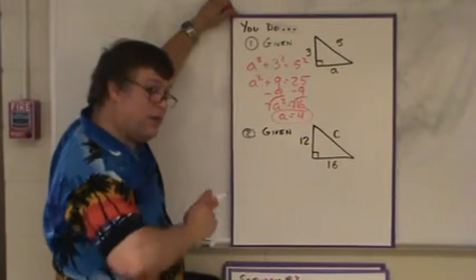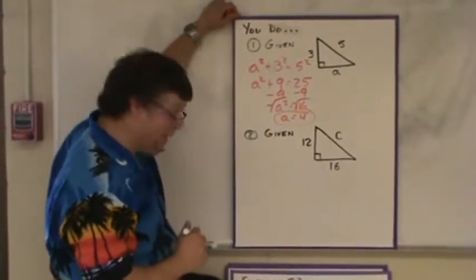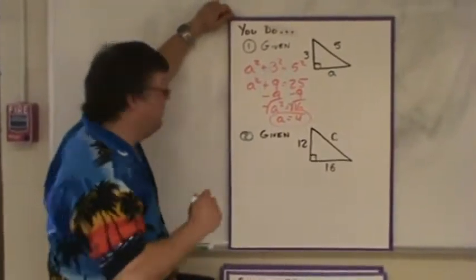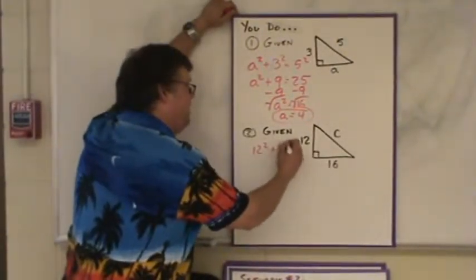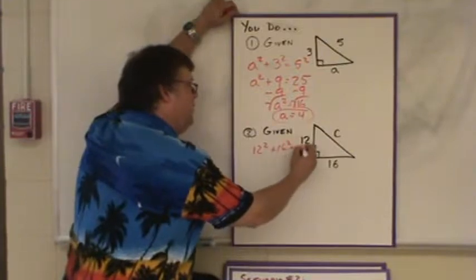Second problem here, which scenario do we have? That's right, scenario one, which means I'm going to be adding the two numbers together. We're going to have 12 squared plus 16 squared is equal to c squared.